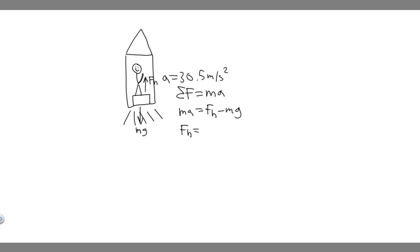So we can say F sub n equals, and then I'm going to add mg to the other side. So you get mg plus ma. And then we can factor out an m, so just m times g plus a.